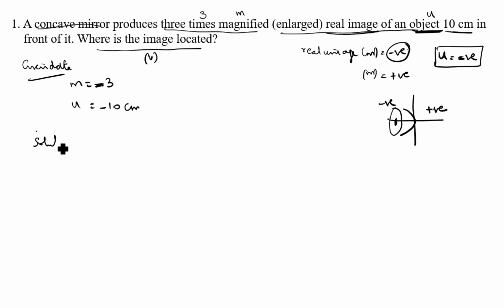Solution: The formula for m is minus v by u equals minus 3. So minus v equals minus 3 times u. What is u in this case? Minus 3 times minus 10 equals plus 30. So minus v equals plus 30, therefore v equals minus 30 centimeters.